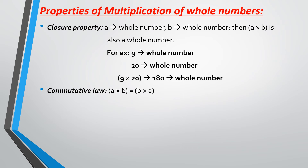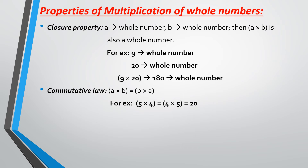Next, the commutative property of multiplication: if A and B are whole numbers, then A multiplied by B will be equal to B multiplied by A. Even if you rearrange the order of multiplication, the answer is going to be the same. 20 multiplied by 9 equals 180, and 9 multiplied by 20 is also 180. For example, 5 multiplied by 4 is 20 and 4 multiplied by 5 is also 20.